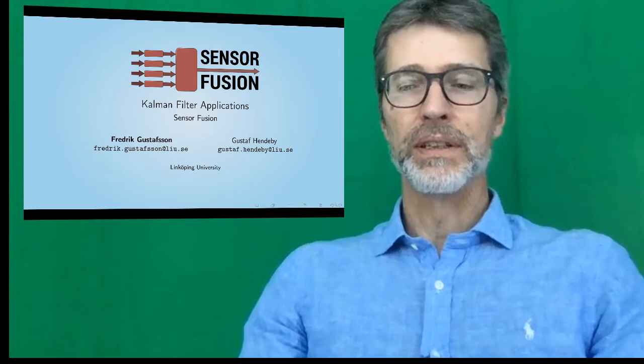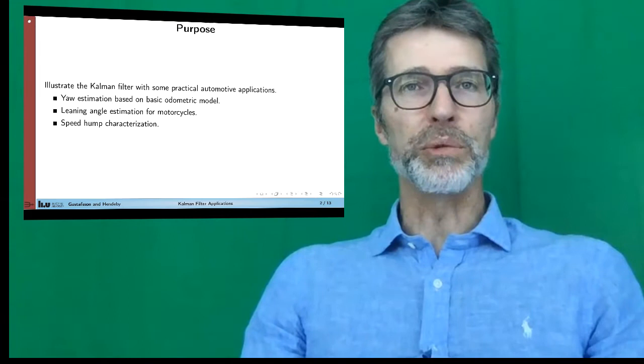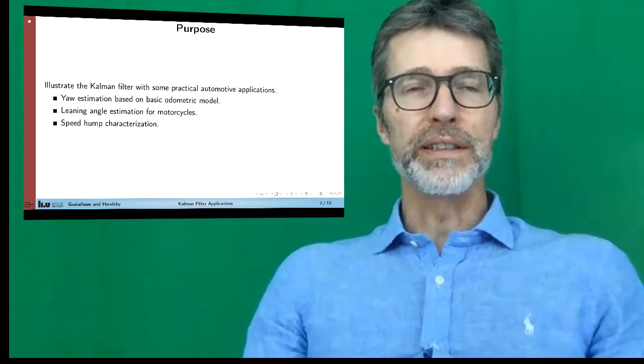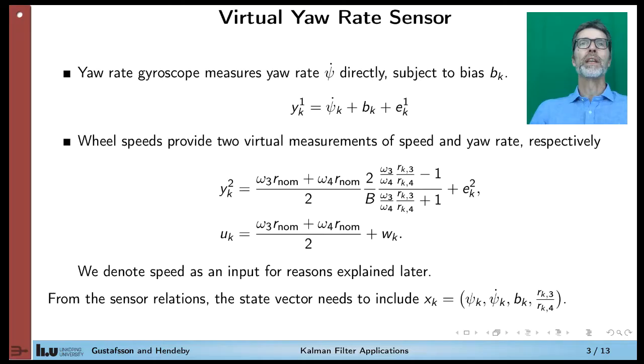I will describe how to estimate yaw rate in a car, the leaning angle of a motorcycle, and how to characterize a speed hump when you pass it. Let's start with the virtual yaw rate sensor. We derived in another lecture a virtual yaw rate sensor based on wheel speeds. If you can measure the wheel speeds on one axis, then you can compare them and both determine the speed of the car and the yaw rate. And if you have a gyroscope on your car, you can also directly measure the yaw rate. But that gyroscope will have a bias, and that bias will give rise to drift in your yaw angle. That might become quite cumbersome after a while.